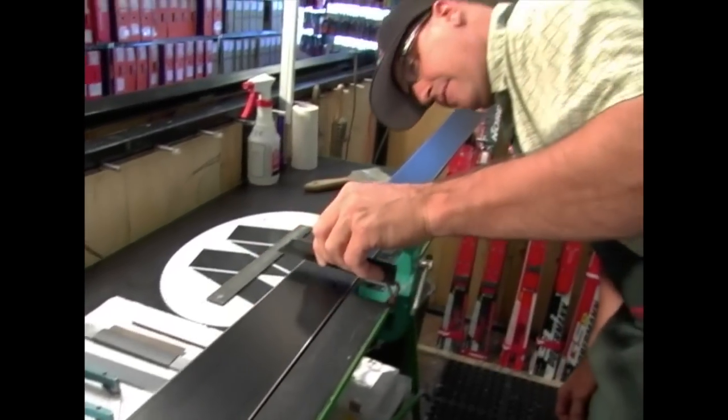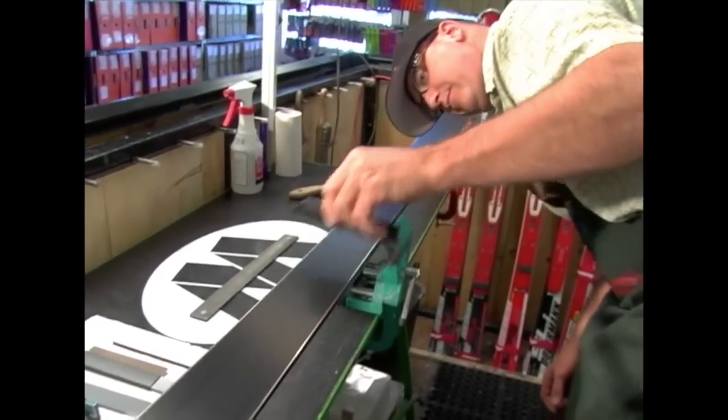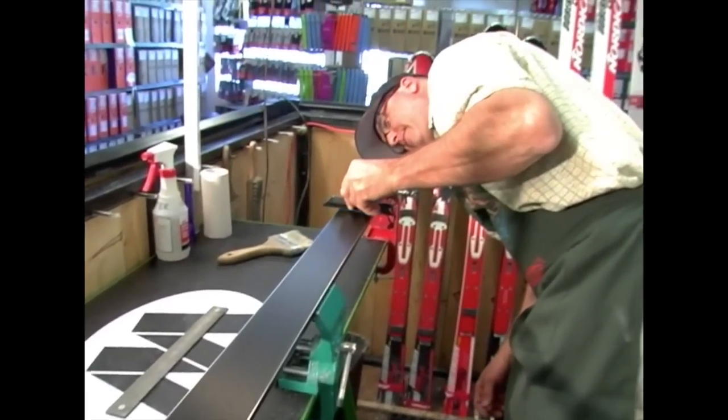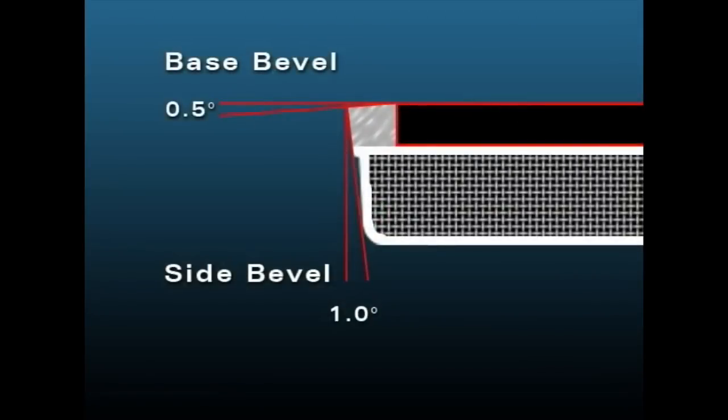One is by feel with the base bevel guide, just knowing that the file is no longer pulling. But to confirm it, use your straight edge, sight through, and look right above the edge. You will see light coming through where the bevel has been determined.